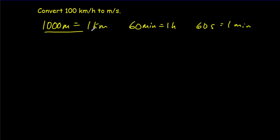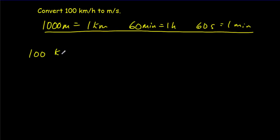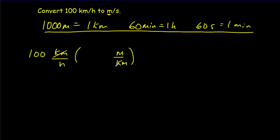Let's use those conversion factors to solve this problem systematically. I'll start with 100 kilometers per hour. I want to end up in meters, not kilometers — so I want a meter in the numerator and I need to cancel out that kilometer in the denominator. That gives me meters per hour — not quite what I want, but a step closer.